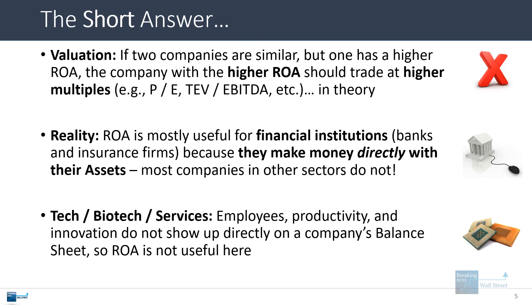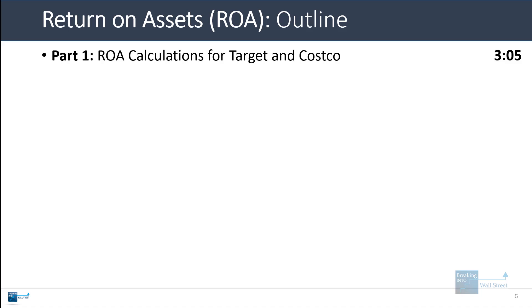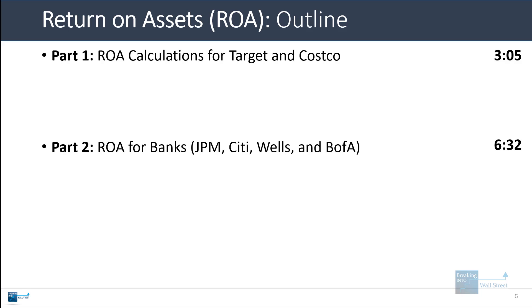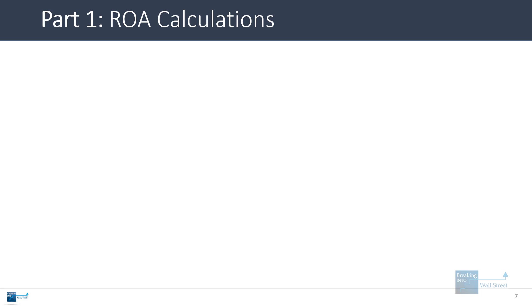That's the short answer. Now let's go through the longer answer. Here's the outline with timestamps. We're going to go through ROA calculations for Target and Costco first. Then we'll look at ROA for banks and do a quick comparison between JPMorgan, Citi, Wells Fargo, and Bank of America — the biggest banks in the US. And then we'll discuss how you might use ROA in real life in financial models.